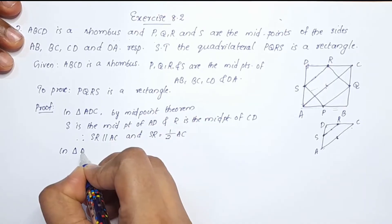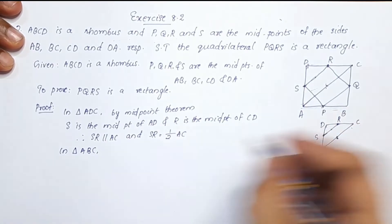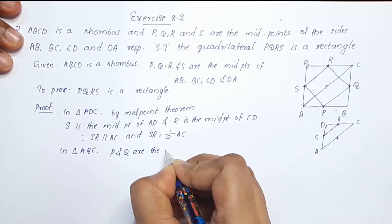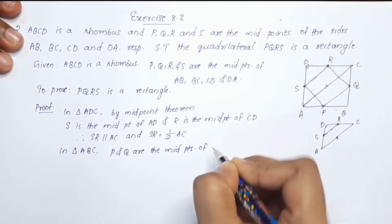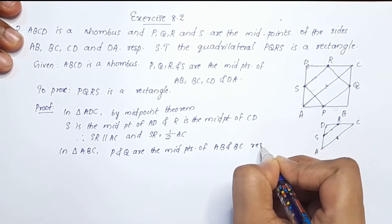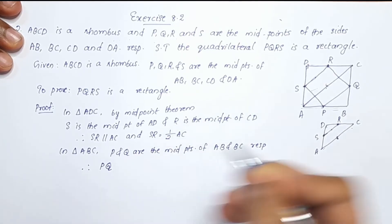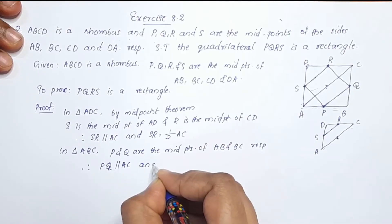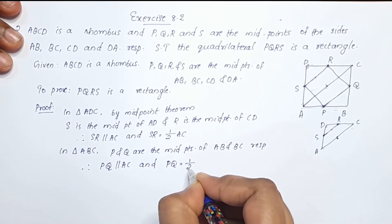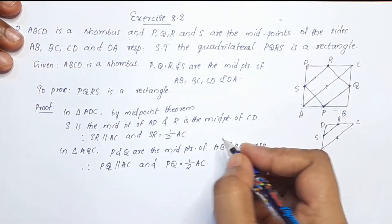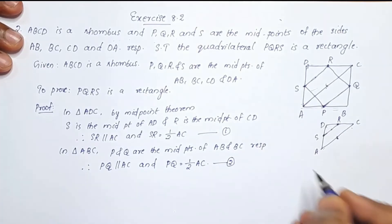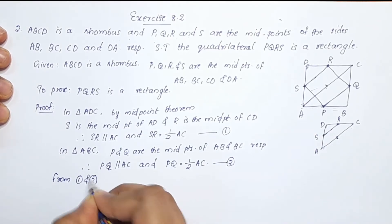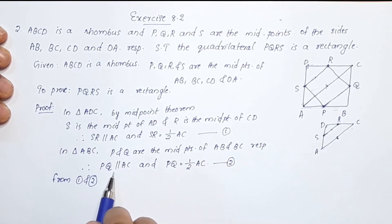In triangle ABC, P is the midpoint of AB and Q is the midpoint of BC. Therefore, by the midpoint theorem, PQ is parallel to AC and PQ is equal to half AC. From equations 1 and 2, SR is parallel to AC and PQ is parallel to AC.